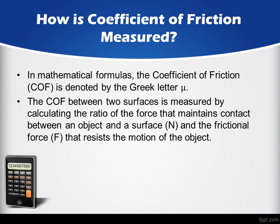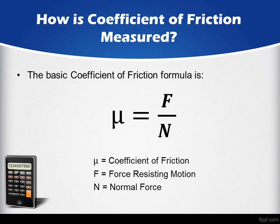How is Coefficient of Friction measured? In mathematical formulas, the Coefficient of Friction is denoted by the Greek letter Mu. The COF between two surfaces is measured by calculating the ratio of the force that maintains contact between an object and a surface, and the frictional force that resists the motion of the object. Here is the basic formula for calculating Coefficient of Friction.